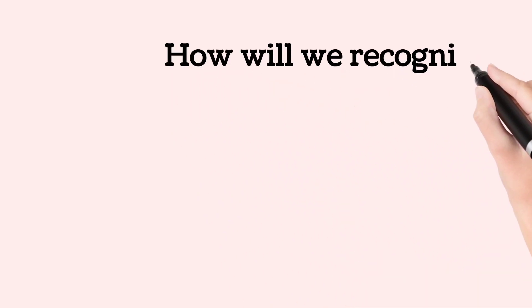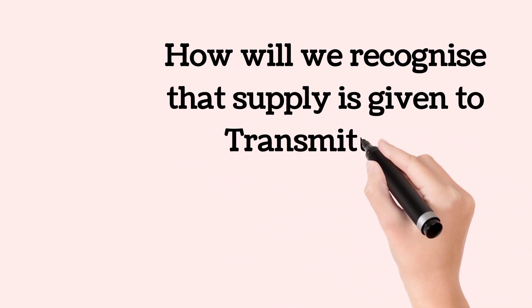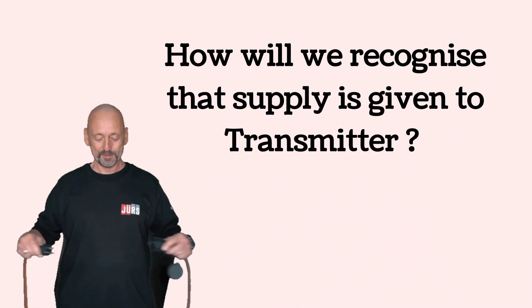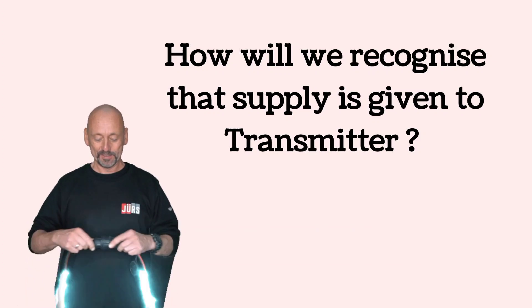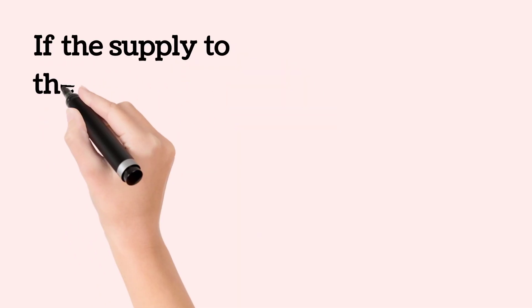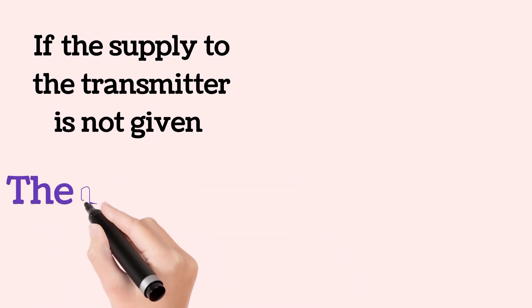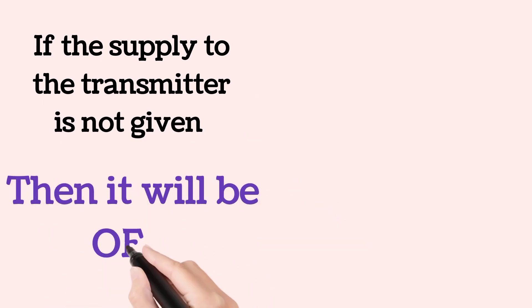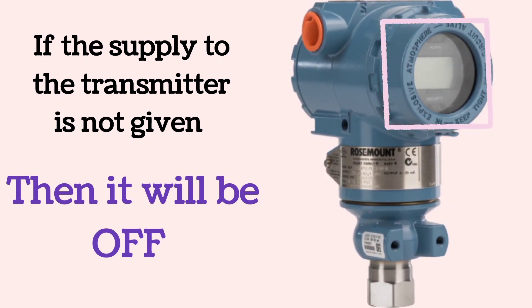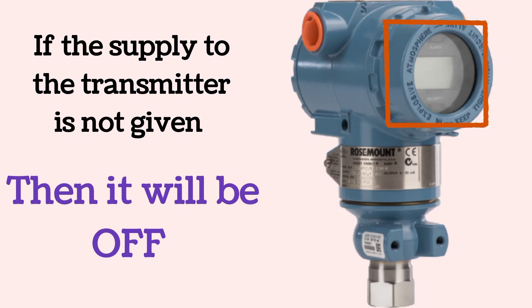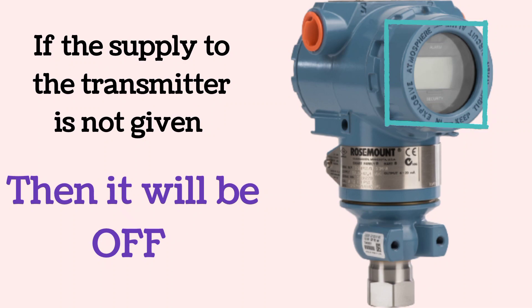First we will discuss how to recognize that the supply is provided to a transmitter. You must know whether the supply is being given to the transmitter or not. Suppose we are not giving supply to the transmitter — then it will be off. In the image, the transmitter is shown and in the square box its display is shown. The display will be off when the supply is not given to the transmitter.